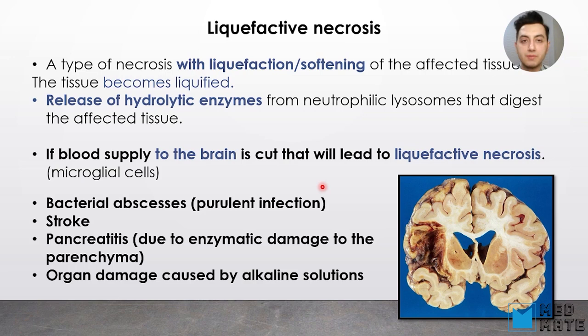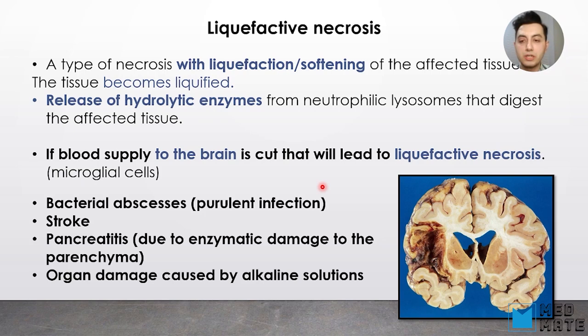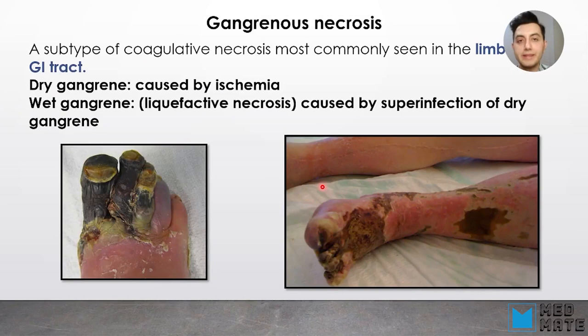Another example of necrosis is liquefactive necrosis. In this type of necrosis, there is liquefaction or softening of the tissue. Affected tissue becomes liquefied due to release of hydrolytic enzymes from neutrophilic lysosomes that digest the affected tissue. This type of necrosis happens in the brain — coagulative necrosis does not occur in the brain — because of the presence of microglial cells. Liquefactive necrosis also occurs in bacterial abscesses with purulent infection, in stroke, or in pancreatitis due to enzymatic damage to the parenchyma of the pancreas.